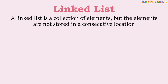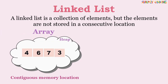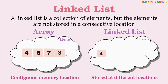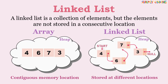Let's look at it in comparison with arrays. Arrays are stored at contiguous memory location. Different items of a linked list are stored at different locations in memory. All of the elements have one additional piece of information which is linked to the next element.